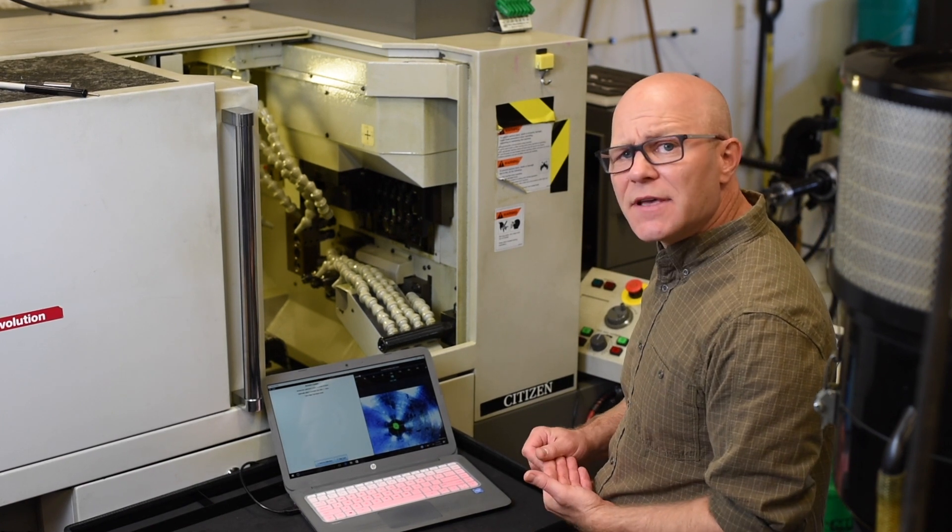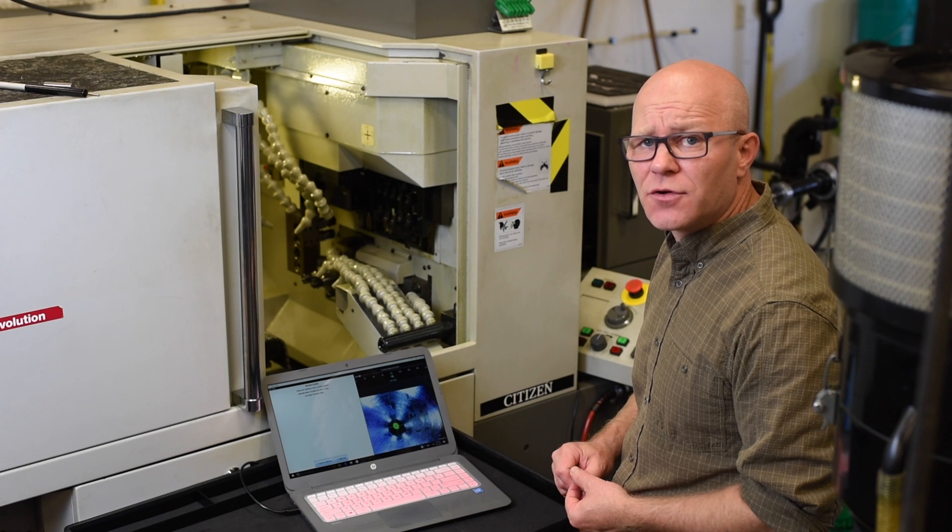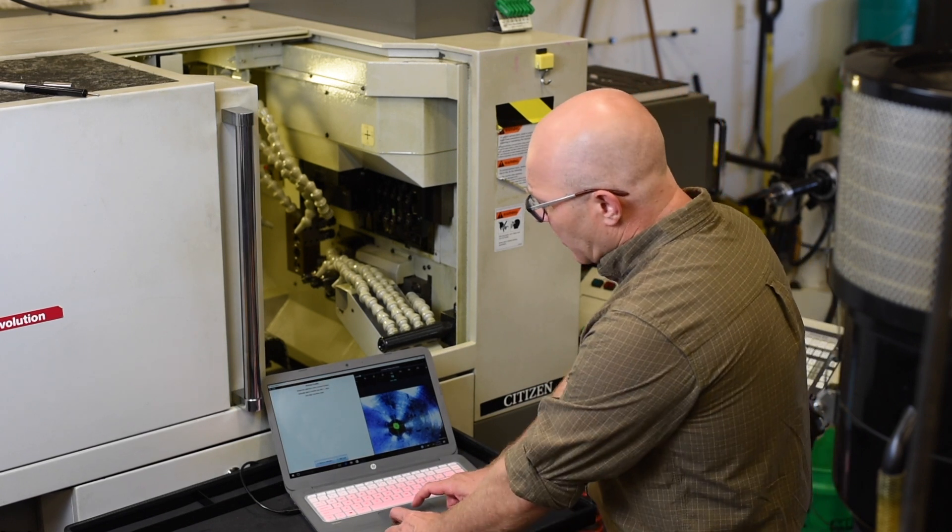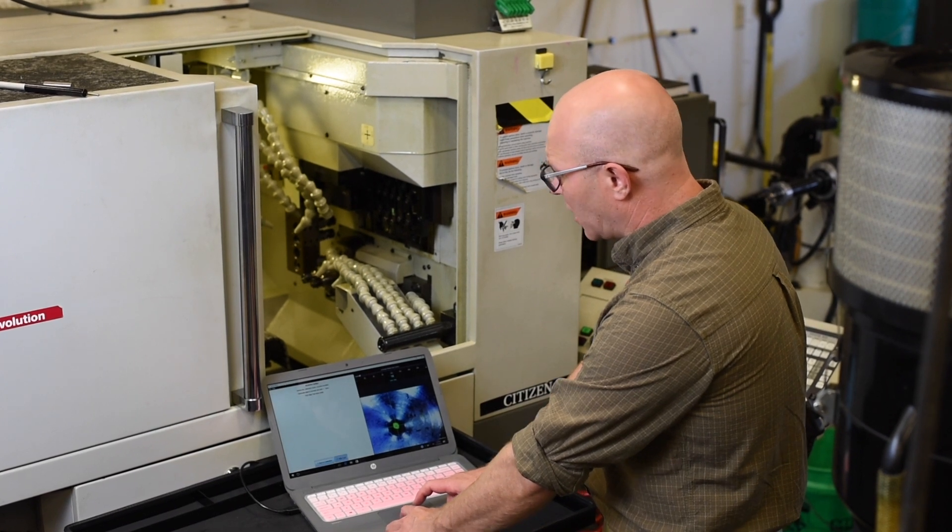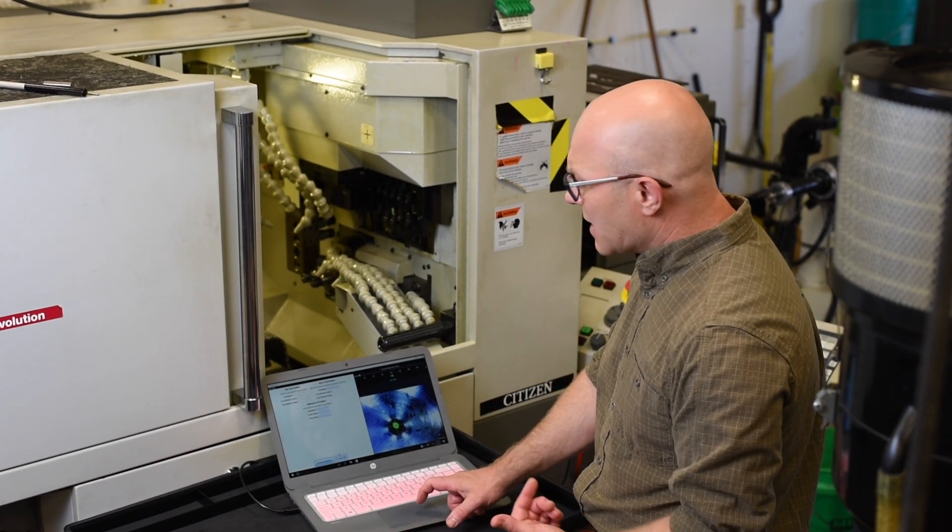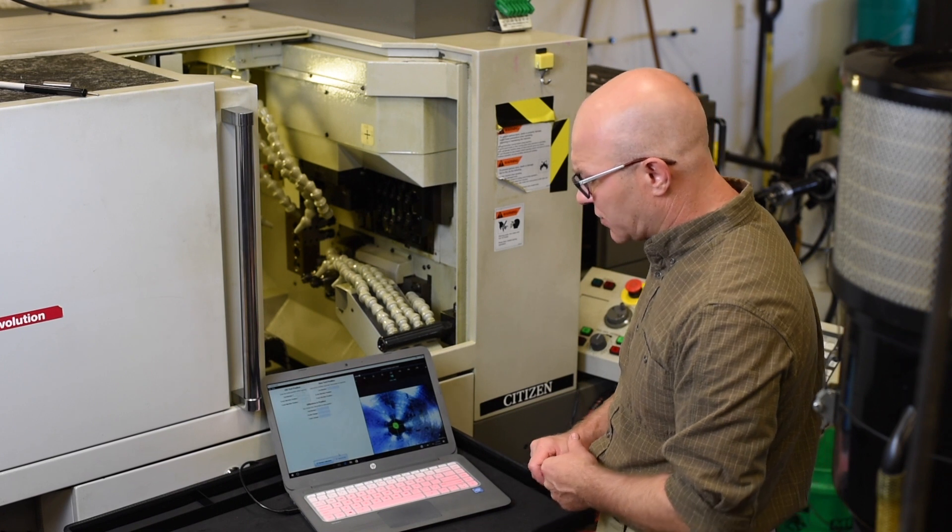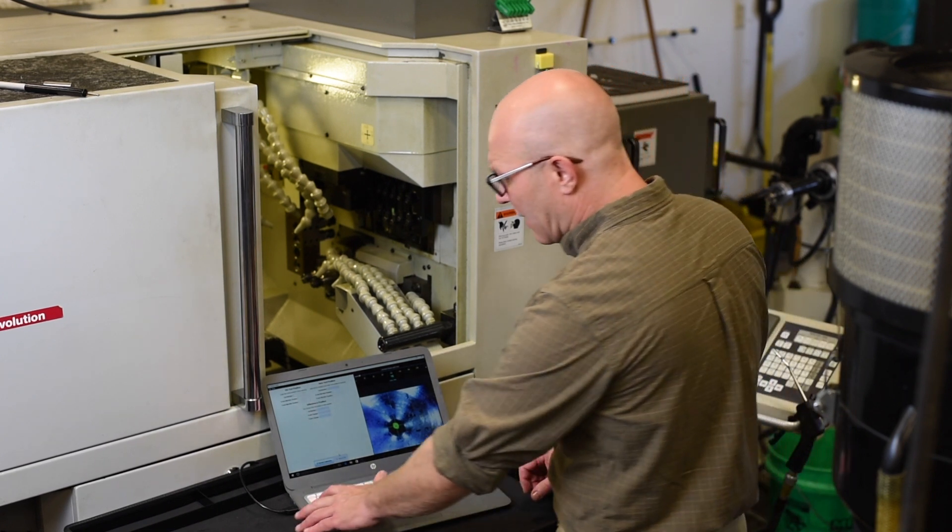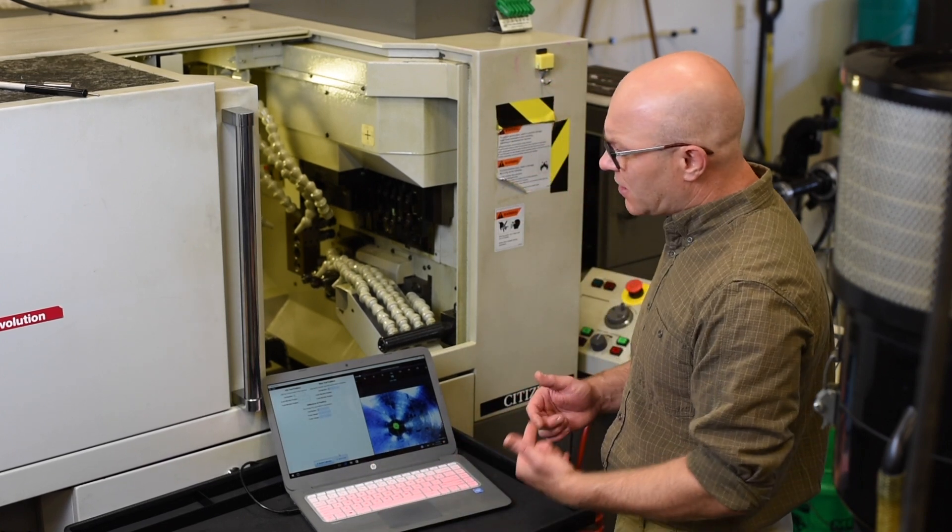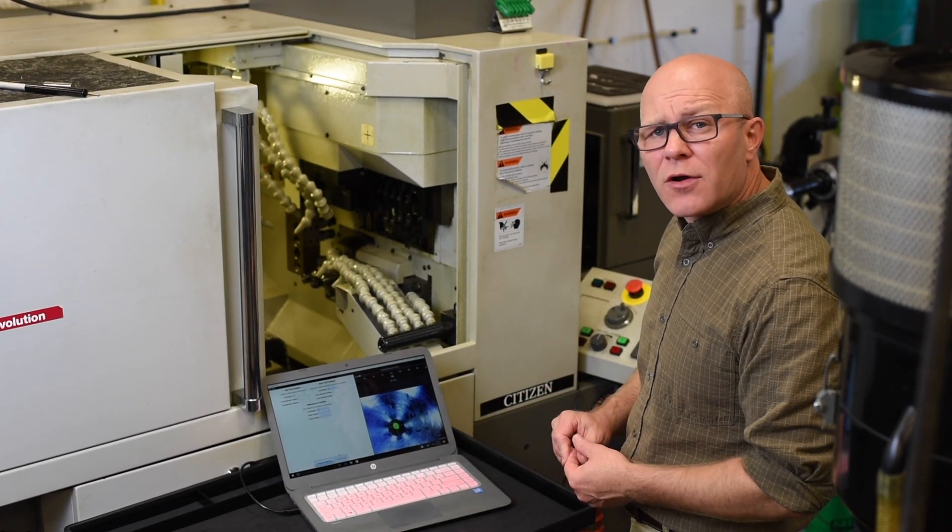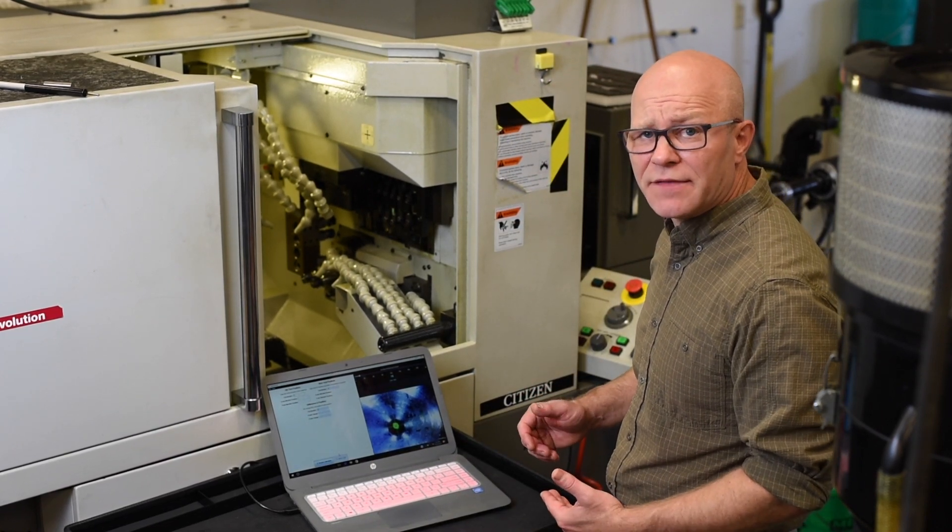The next step is that we want to look at one of the tools that we're having an issue with. So we want to use the icon on the bottom of the screen called Align Tool, and we're going to enter a little bit of information about that tool. So we're going to look at Tool 11, and we want to call that tool up, and now we're going to save the machine position of that tool.